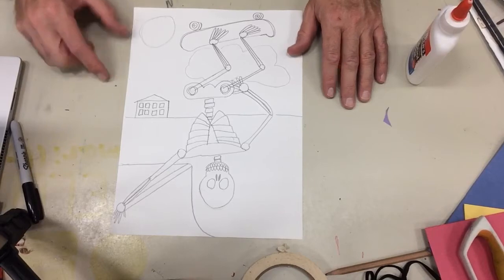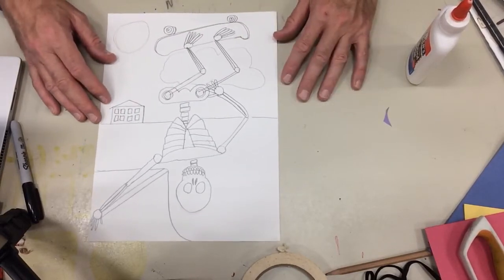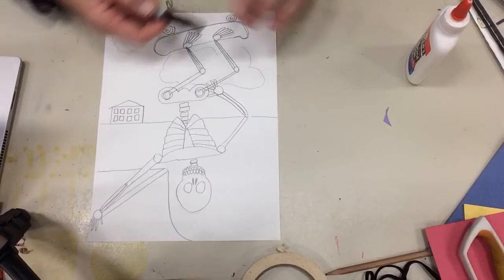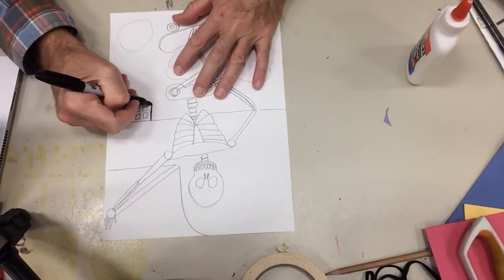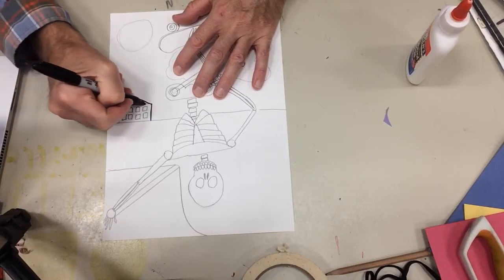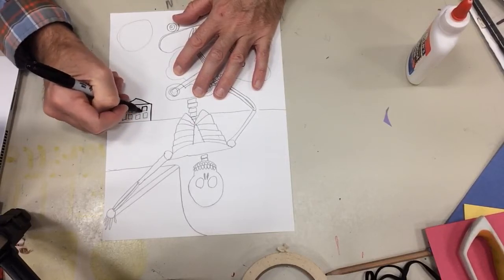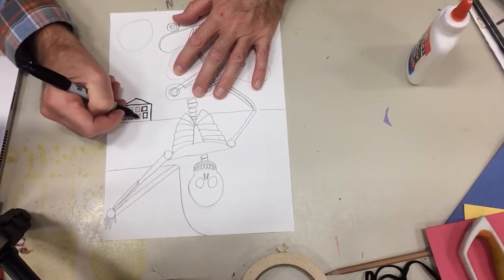Once you have details in your picture, you're ready to outline it and color it in. So, I'll take my Sharpie and outline it. So, here's my little apartment building.